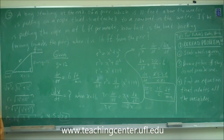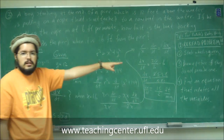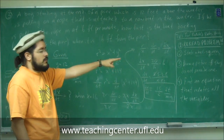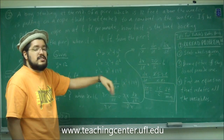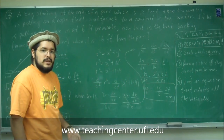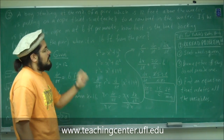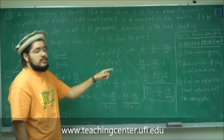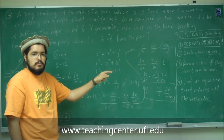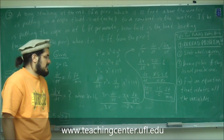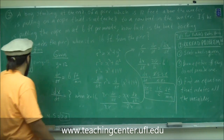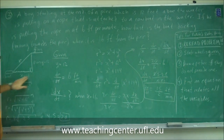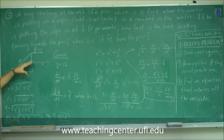Alright, so that's that. So very important: re-read the problem if you don't understand it the first time — re-read it until you understand it. State what is given. Draw a picture if they don't provide you with one. Then find the equation that relates all the variables — Y, X, and R in this case. The equation that relates all these variables is the Pythagorean theorem.